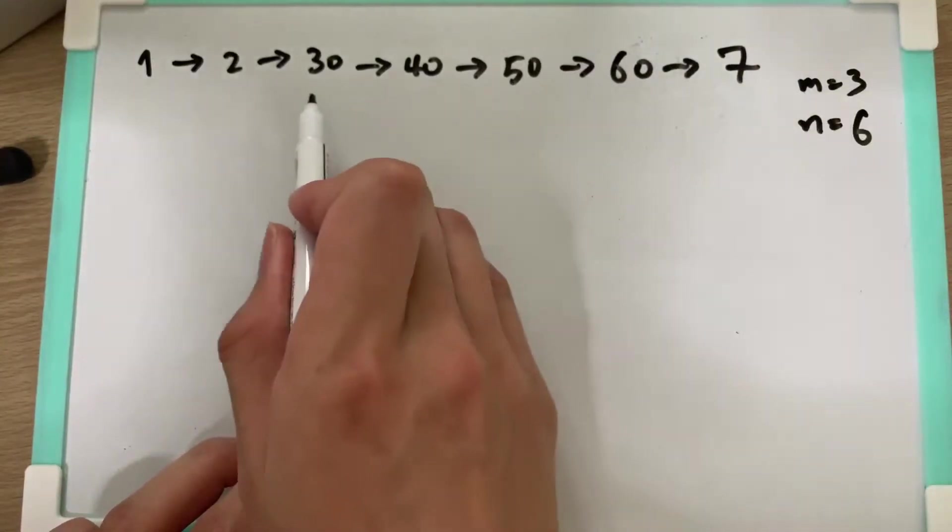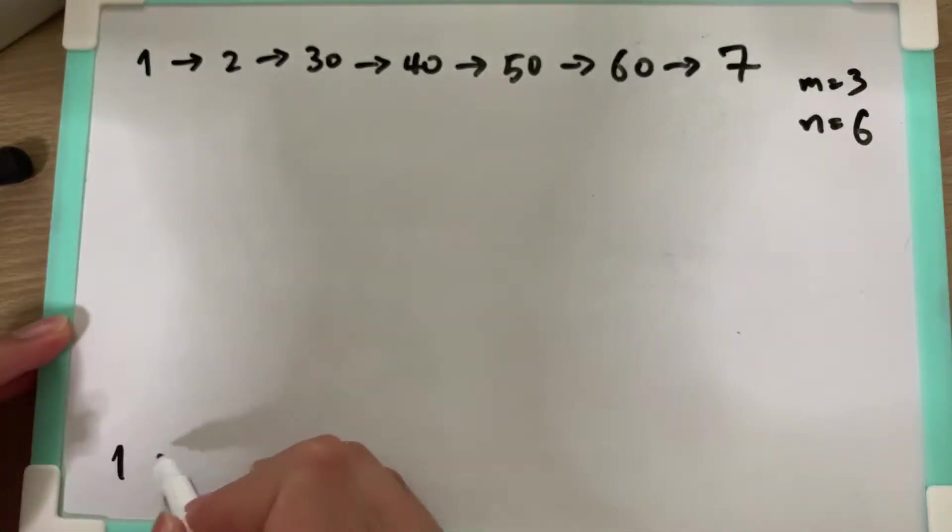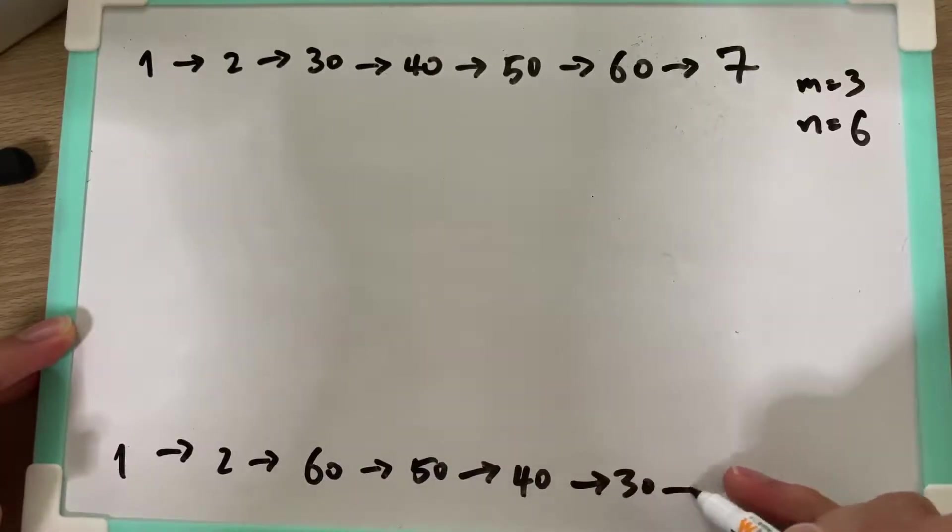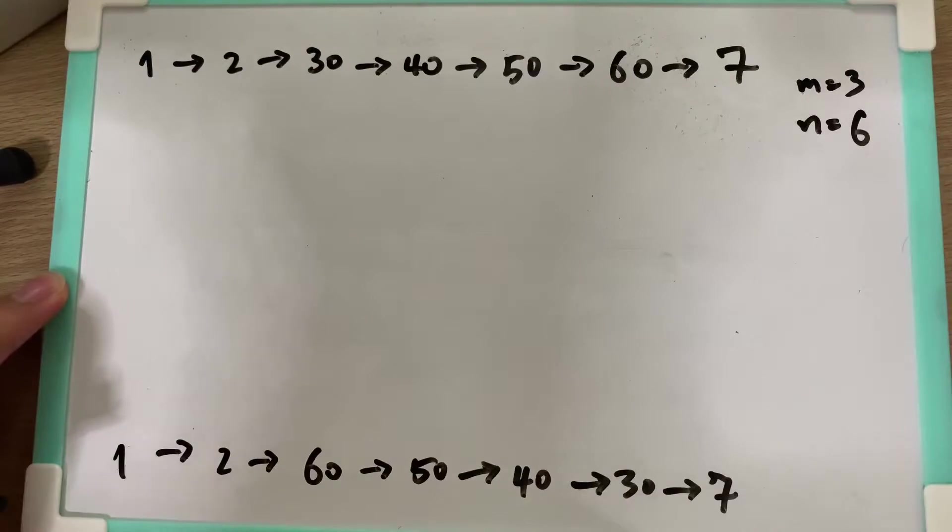If you want to reverse between index 3 and 6, in the end we are going to return 1, 2, 60, 50, 40, 30, and 7. The reversing M and N is M inclusive. How shall we go about it?